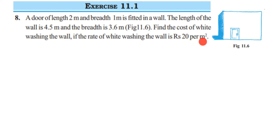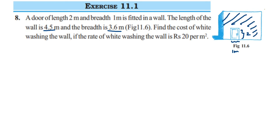This is a simple and interesting question. We have to find the area of the white portion — the part of the wall to be whitewashed. The wall is in the shape of a rectangle, and we are given its length of 4.5 meters and breadth of 3.6 meters. We are also given the door dimensions: length 2 meters and breadth 1 meter.